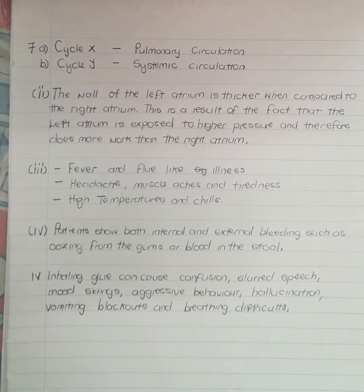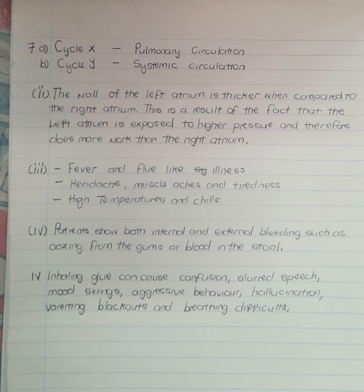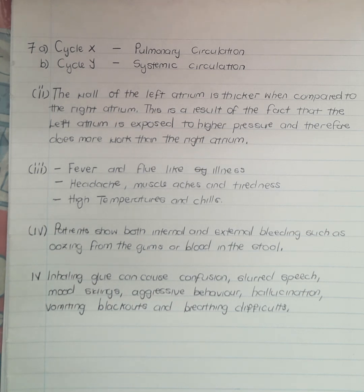This was the complete solution for number 7. On 7a part 1, we deduced the type of circulation represented by cycles X and Y. Cycle X is pulmonary circulation — it pertains to the lungs. Cycle Y is systemic circulation — it pertains to the major circulation of the body.